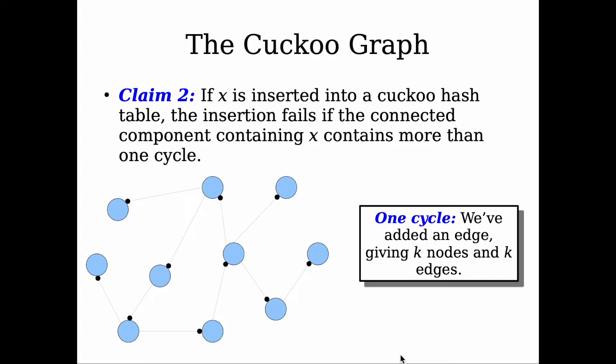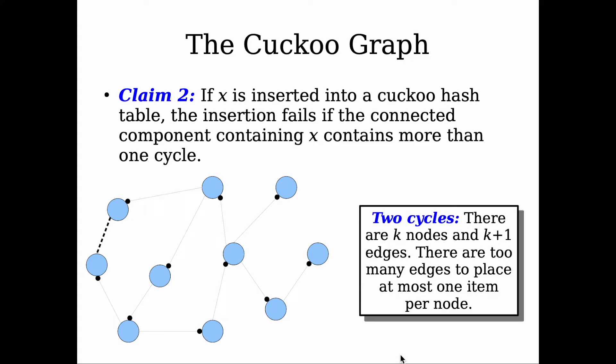For the second case, if we allow one cycle, we build from the previous structure in a tree. If we add an additional edge to our tree, instead of having k minus one edges, we will now have k edges with the same total number of slots, which is k. So we have k nodes and k edges, so we have exactly the same number of slots and the same number of elements. So it's okay—it will fit. That's why we allow one cycle in claim number one.